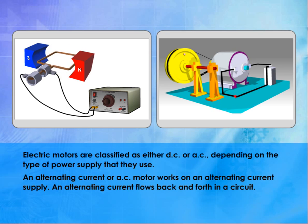An alternating current or AC motor works on an alternating current supply. An alternating current flows back and forth in a circuit.